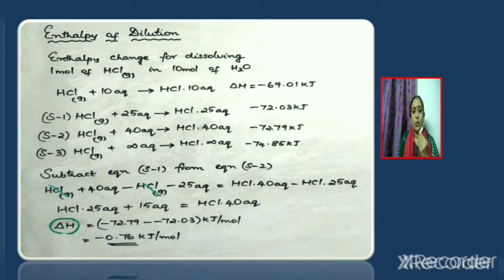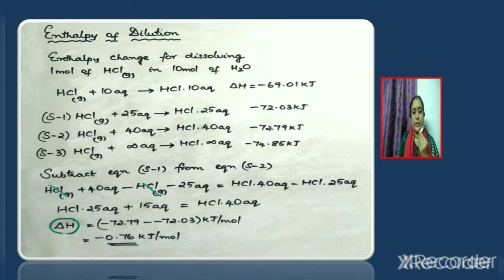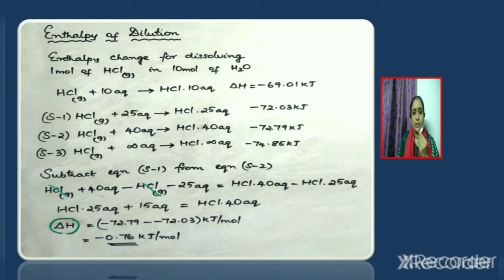When one mole of HCl gas is mixed with 25 moles of water, equation S-1 is: HCl(g) + 25aq → HCl·25aq, and ΔH = −72.02 kJ/mol. When one mole of HCl gas is mixed with 40 moles of water, equation S-2 is: HCl(g) + 40aq → HCl·40aq, and ΔH = −74.85 kJ/mol. Equation S-3 is: HCl(g) + ∞aq → HCl·∞aq, and ΔH = −74.85 kJ/mol.